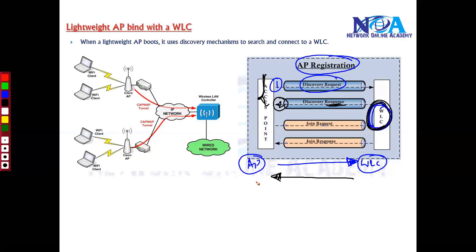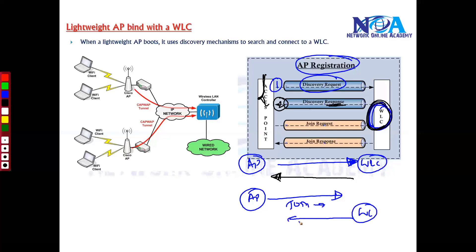In the third step, the access point sends a Join Request, indicating it is ready to join that particular WLC. The access point sends the join request to the WLC, and the WLC responds back with a Join Response — the fourth step.